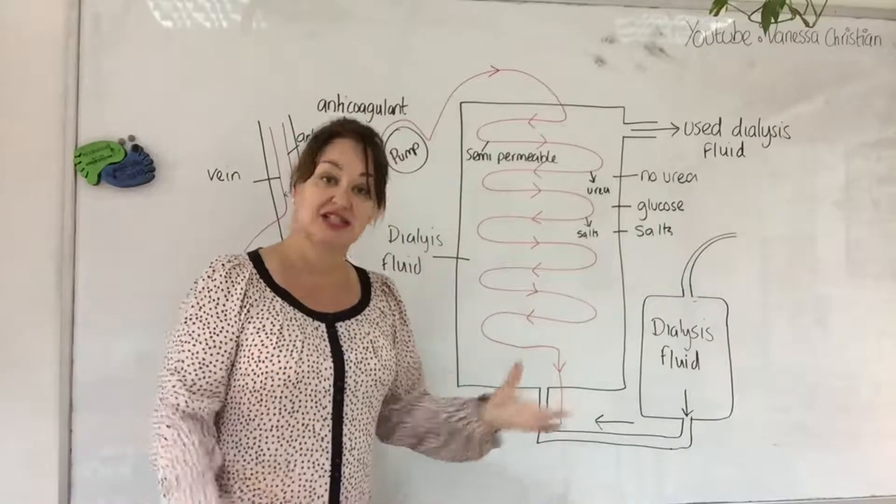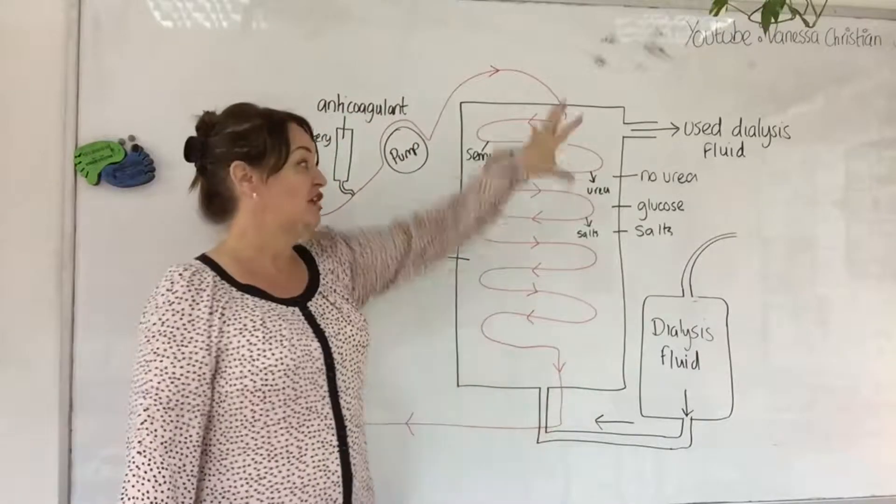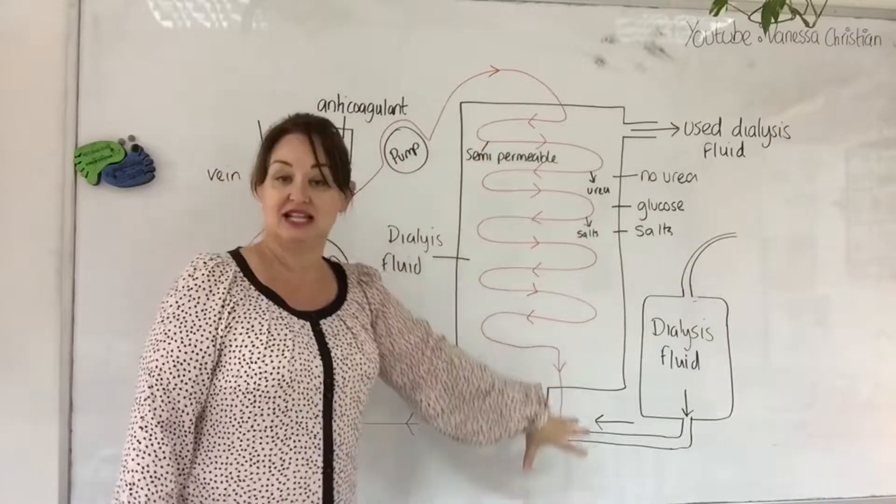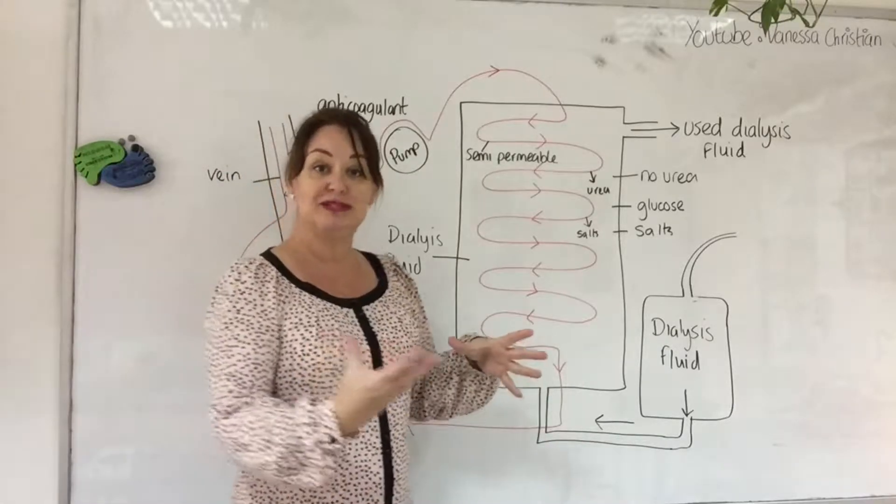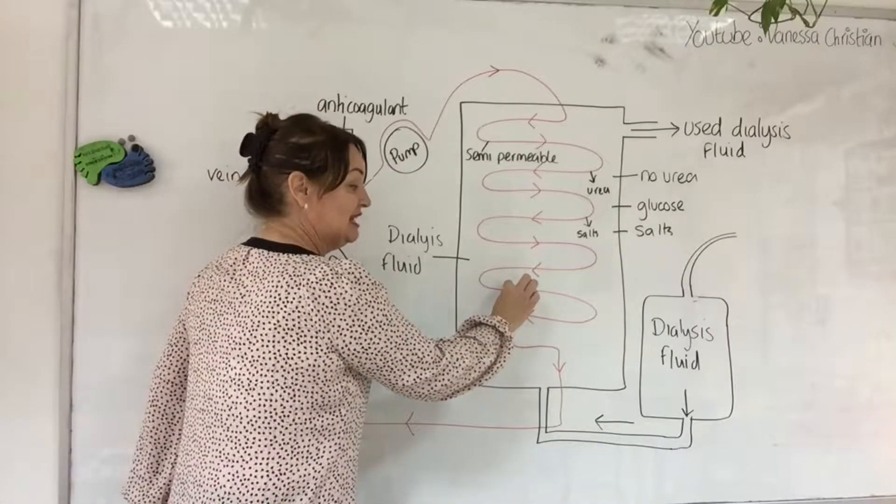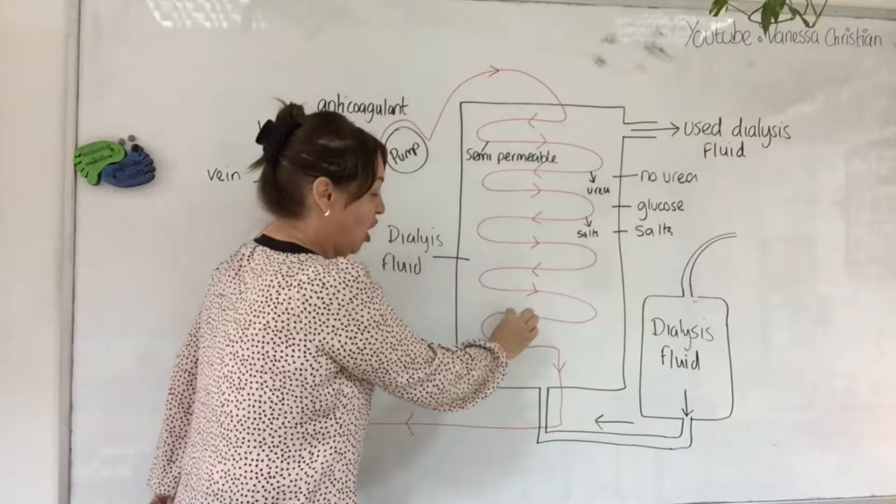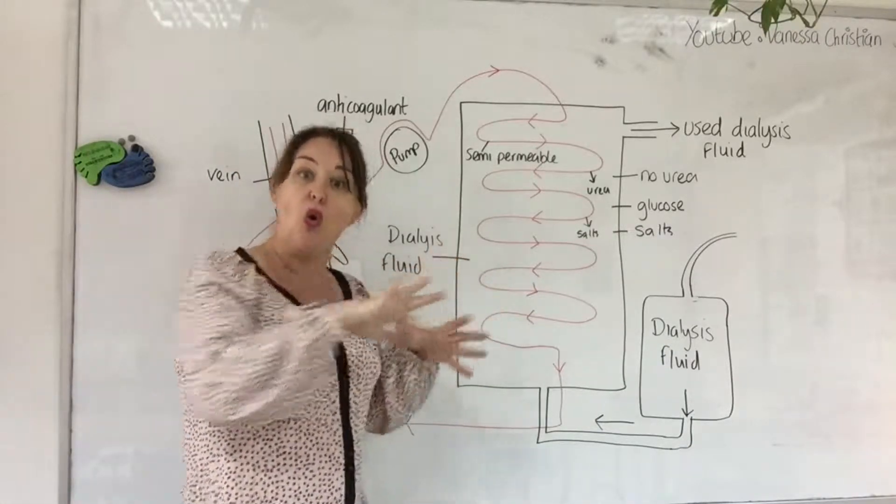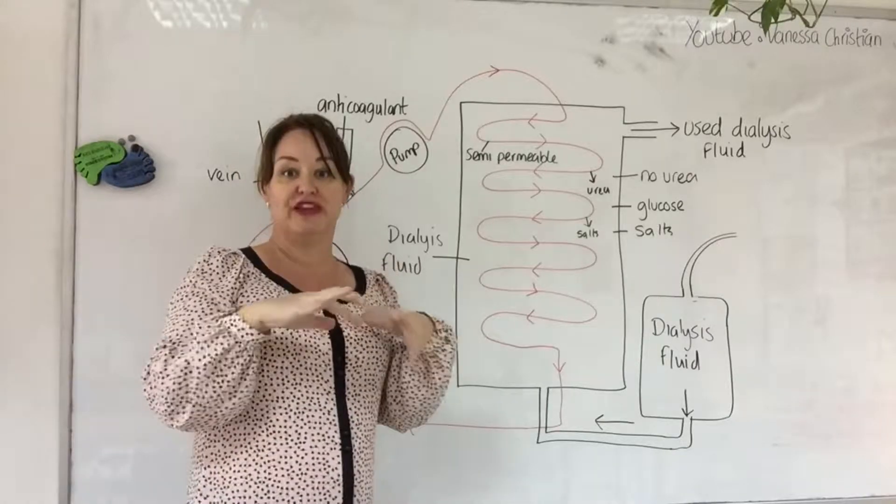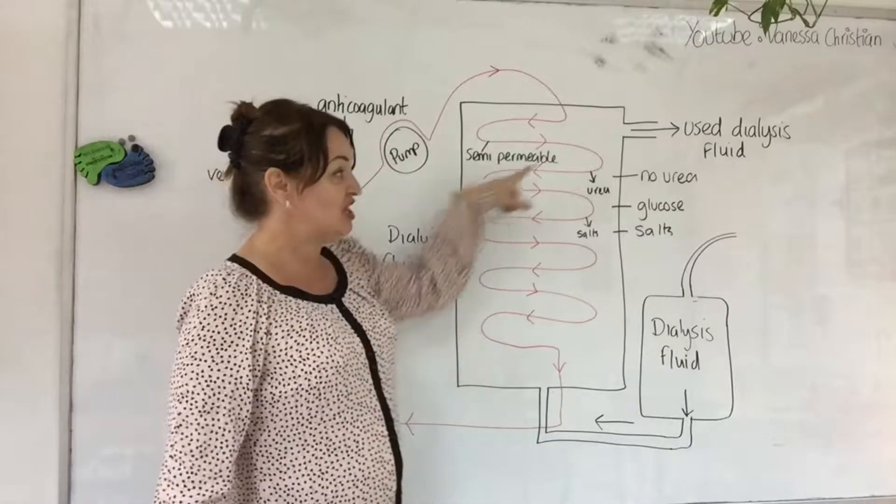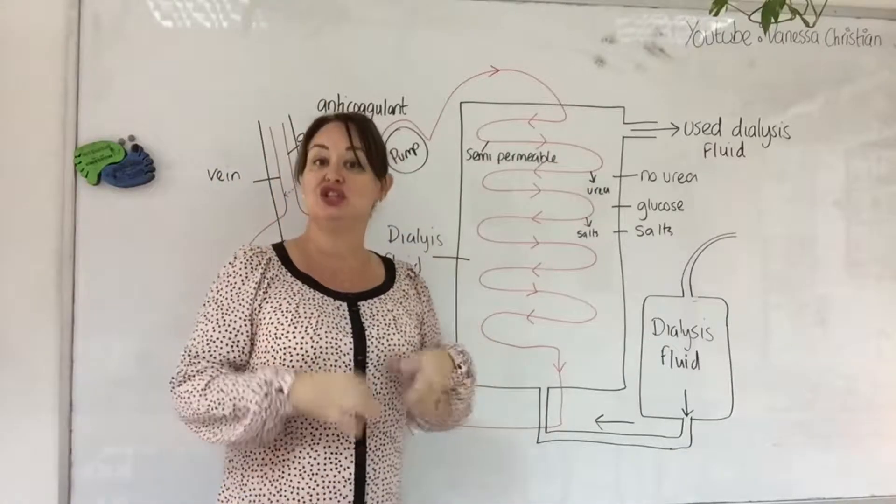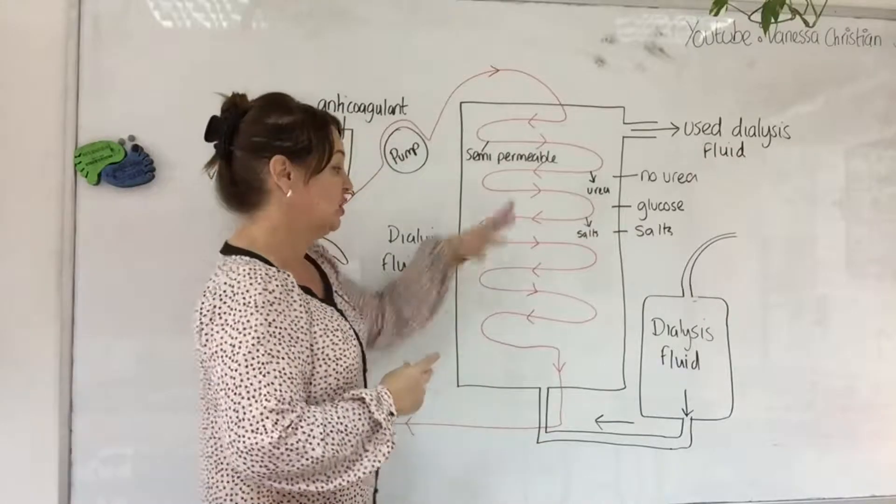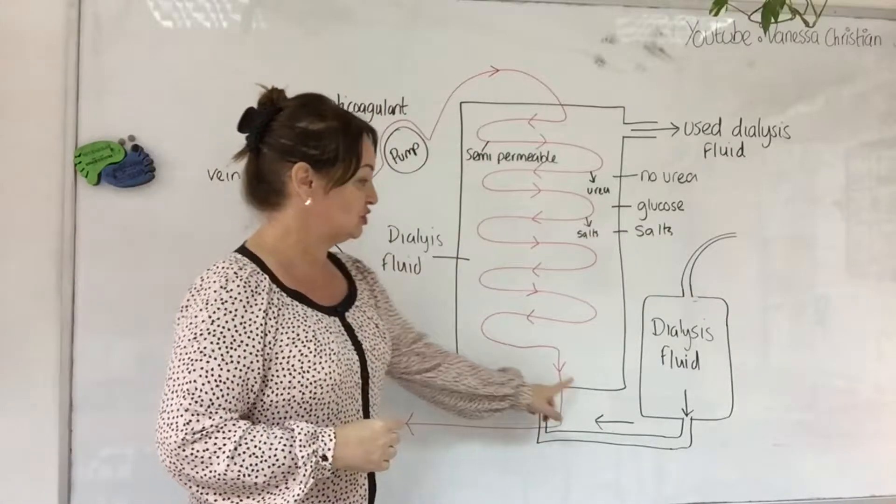We need to change the dialysis fluid because otherwise, if we kept the same dialysis fluid in there, we'd get to a position where it was in equilibrium with that of the blood. It would be 50-50 and we want to get all of it out if possible, or as much of it out as possible. By changing this used dialysis fluid, we're going to achieve that.